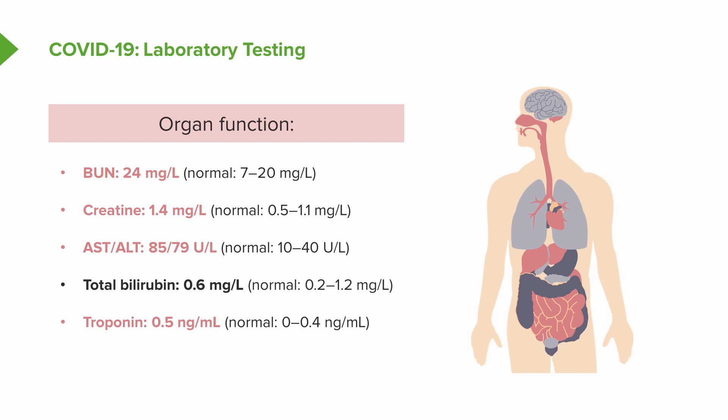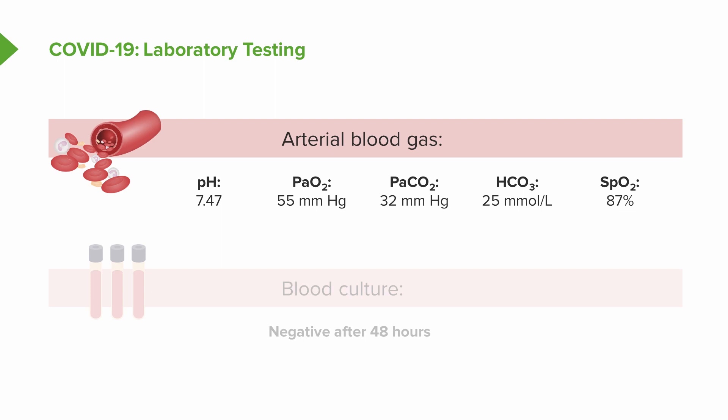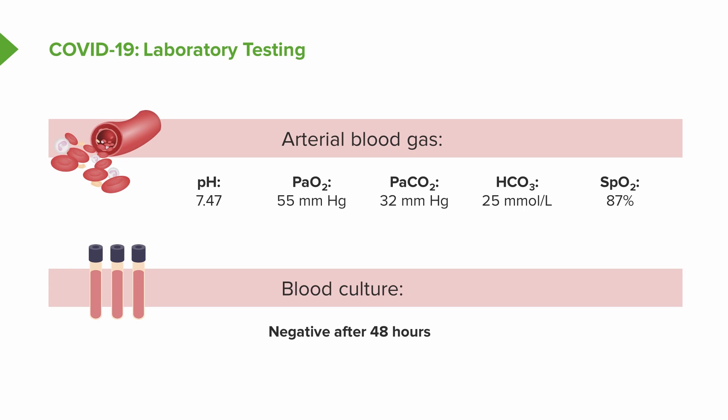His transaminases are elevated — AST 85 and ALT 79 — though total bilirubin is normal. Troponin I is slightly elevated at 0.5 nanograms per milliliter, indicating mild multi-organ involvement consistent with bacterial sepsis, SIRS, or multi-organ dysfunction syndrome seen in advanced COVID-19. His arterial blood gas shows a pH of 7.47, partial pressure O2 of 55 mmHg, partial pressure CO2 of 32 mmHg, and bicarb of 25 mEq/L, with peripheral oxygenation now at 87%. Blood cultures at 48 hours are negative, suggesting no bacterial superinfection at this stage.